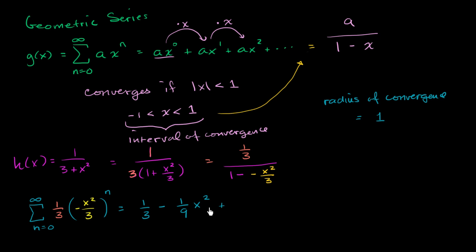So it's going to be plus—the negative times the negative is a positive—plus 1/27 x⁴, x² times x² equals x⁴. And we just keep going on and on.